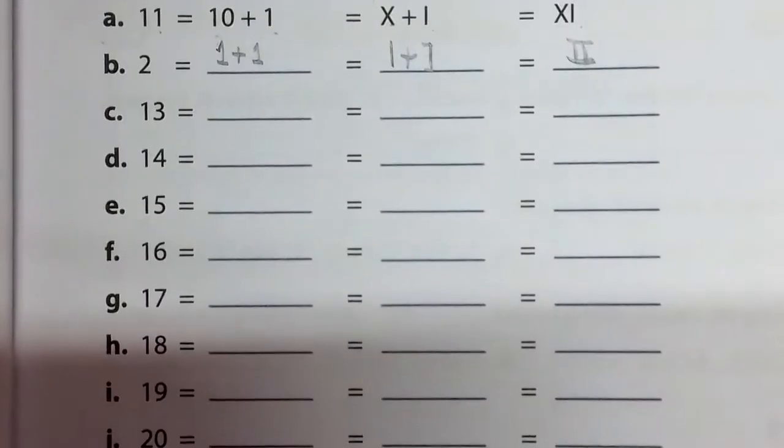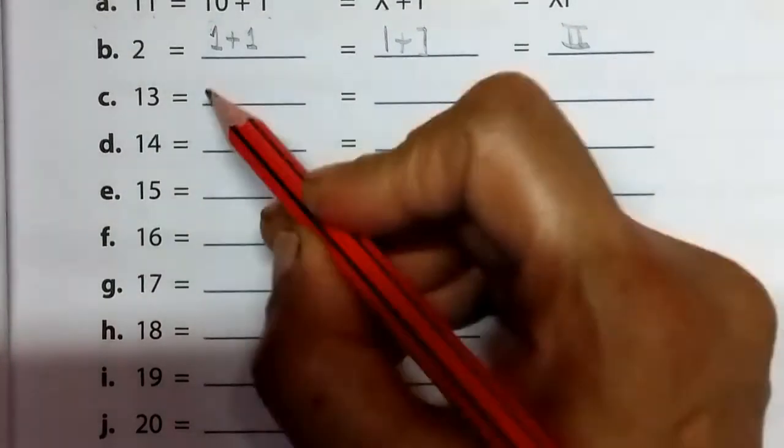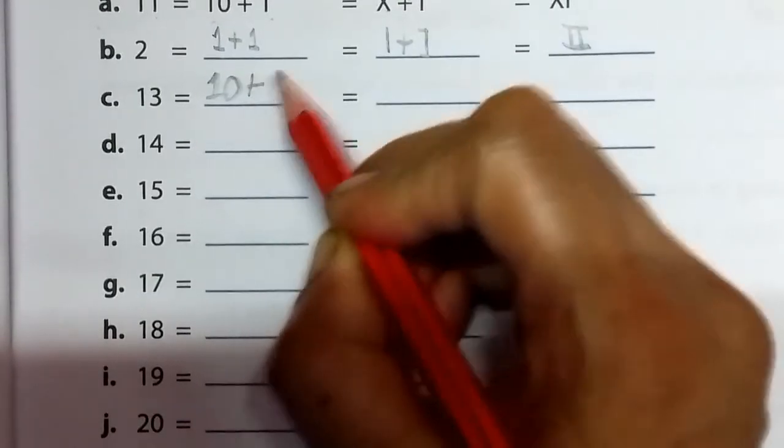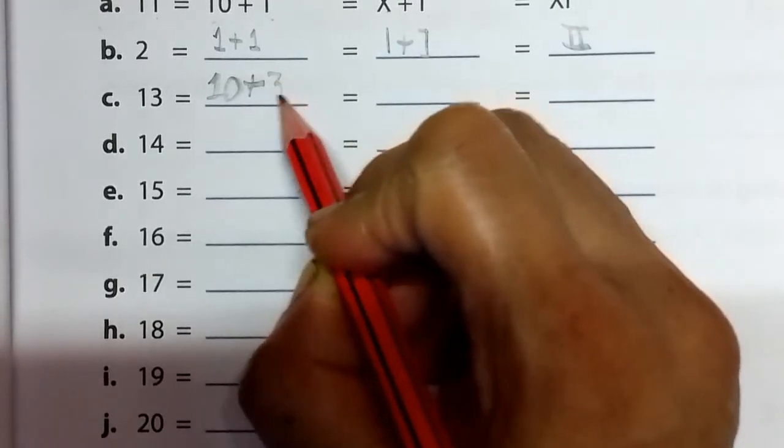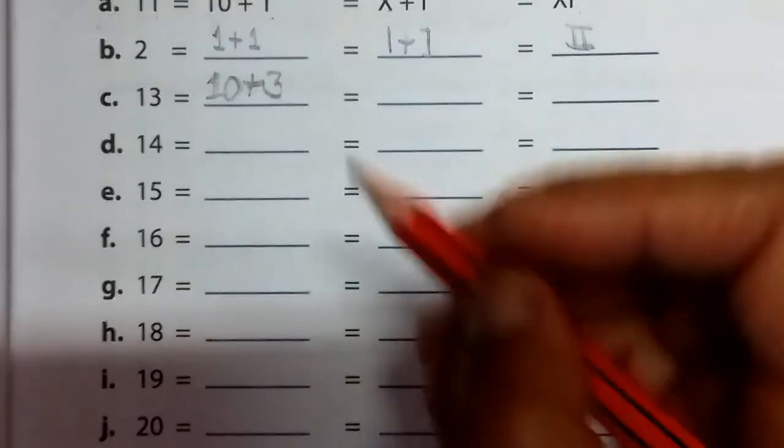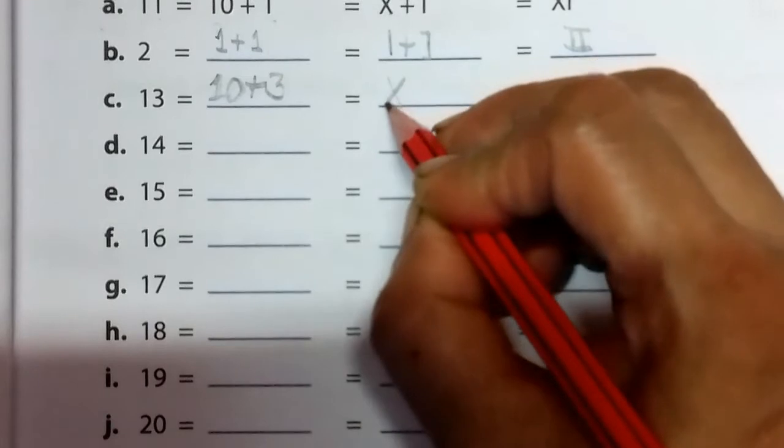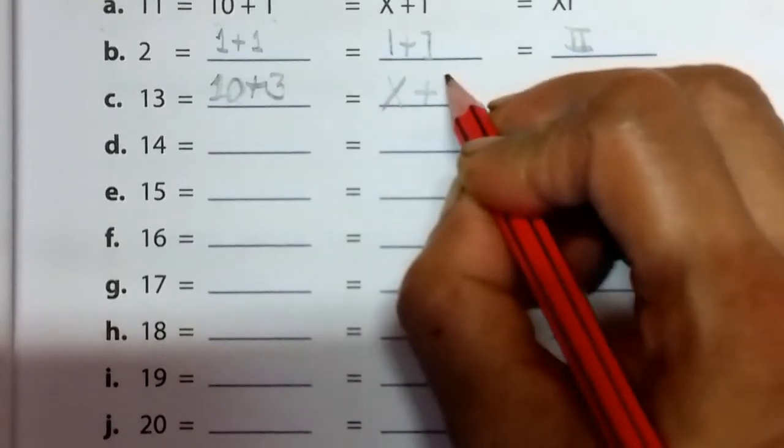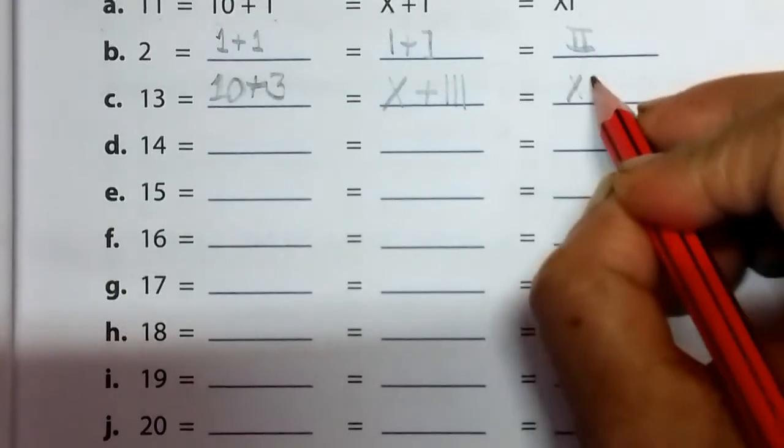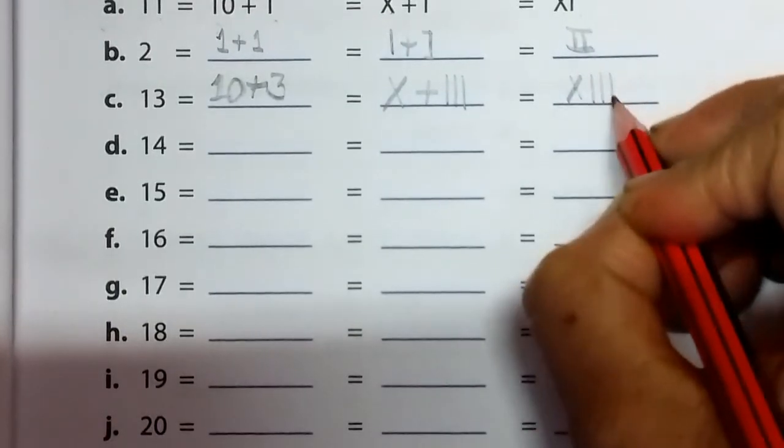Then 13. 13 is 10 plus 3. How do we write 10 in Roman? X means 10, plus 3 means three sticks. Then write here 10 plus 3: XIII.